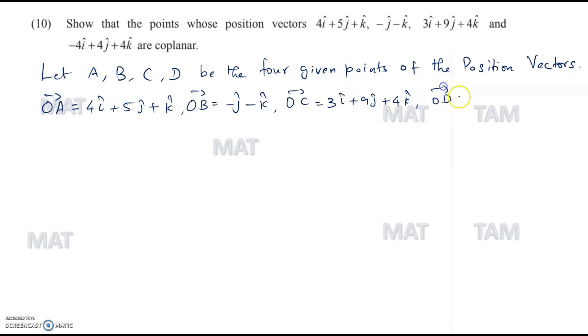Vector AB would be equal to vector OB minus OA. We don't have an i cap here because the coefficient of i cap is 0. So it's minus 4i cap minus 6j cap minus 2k cap.